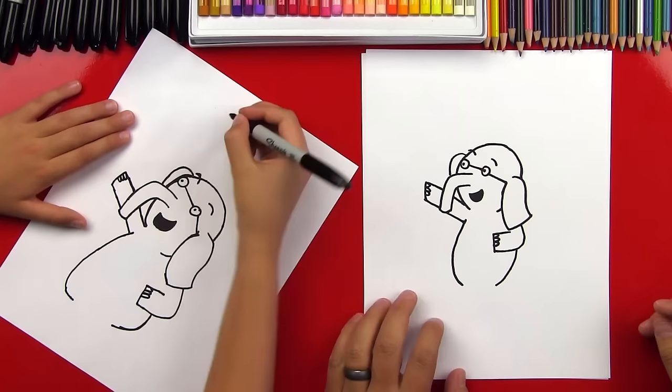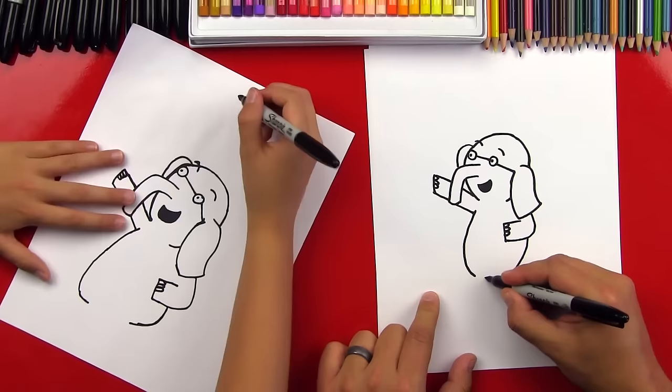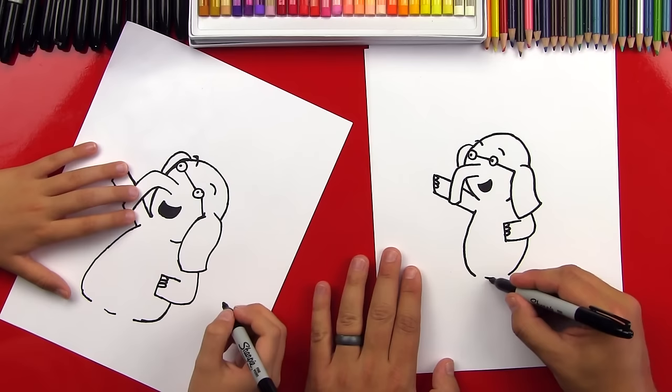Okay, now we're missing his legs. So right here in between these two lines, let's draw another curve. Short one. And then right here we're going to draw a diamond shape. So we're going to draw a bent line. This way.